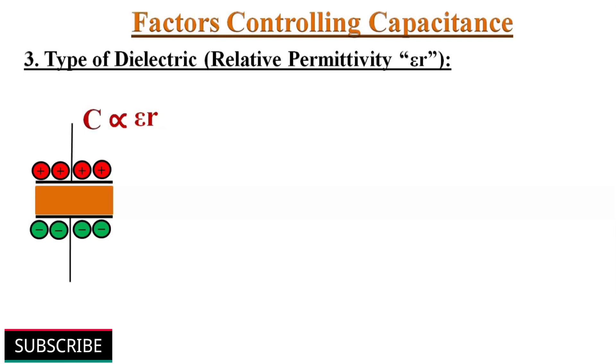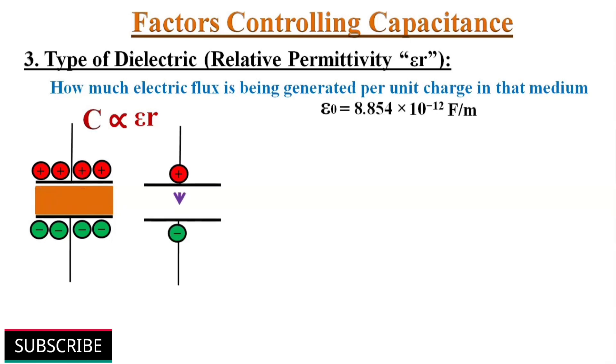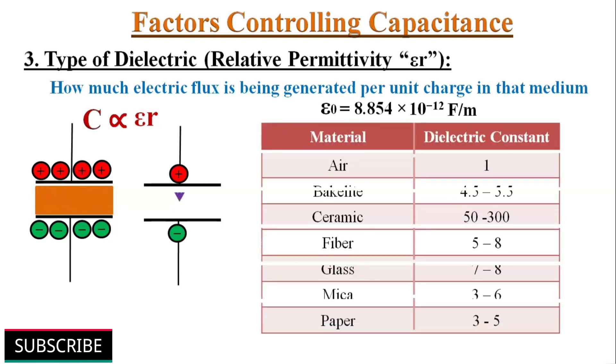How many farads of capacitance a capacitor has depends on the type of dielectric medium used. It is called dielectric constant or relative permittivity. Permittivity of a medium describes how much electric flux is being generated per unit charge in that medium. Here, relative permittivity Er refers to the permittivity of dielectric material in comparison to the permittivity of a vacuum E0. The relative permittivity of some materials is listed in this table. The higher the permittivity, the higher will be the capacitance.